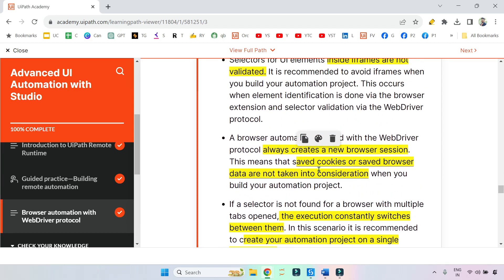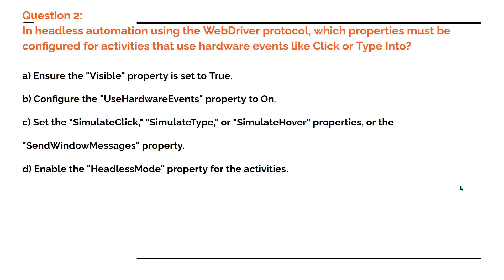Now let's move on to our second question. In headless automation using the WebDriver protocol, which properties must be configured for activities that use hardware events like click or type into? Option A: ensure the visible property is set to true. Option B: configure the use hardware events property to on. Option C: set the simulate click, simulate type, simulate hover properties, or the send windows message property. Option D: enable the headless mode property for the activities.